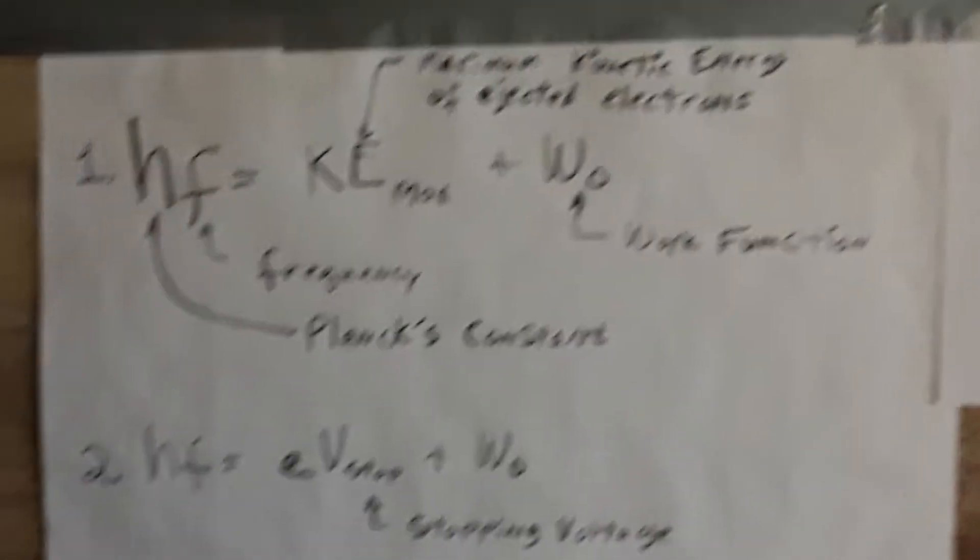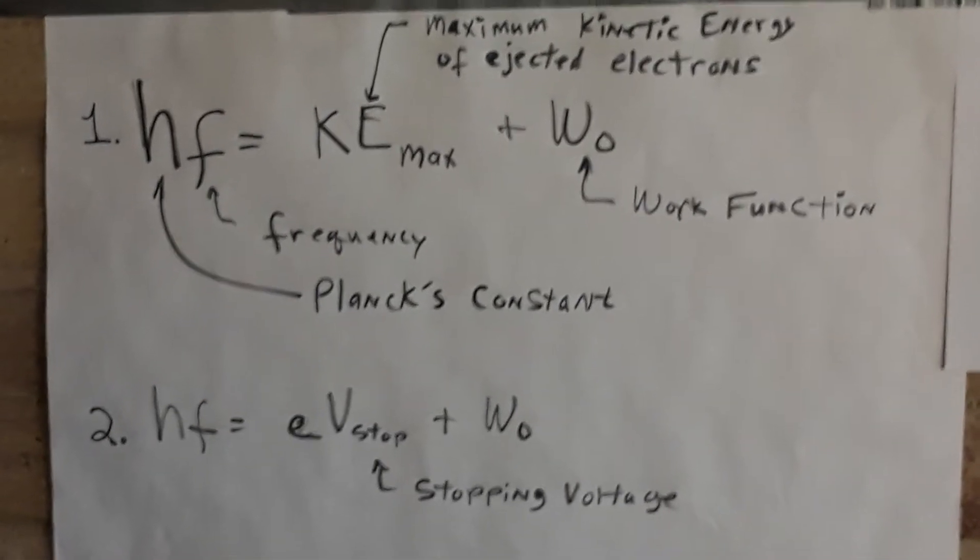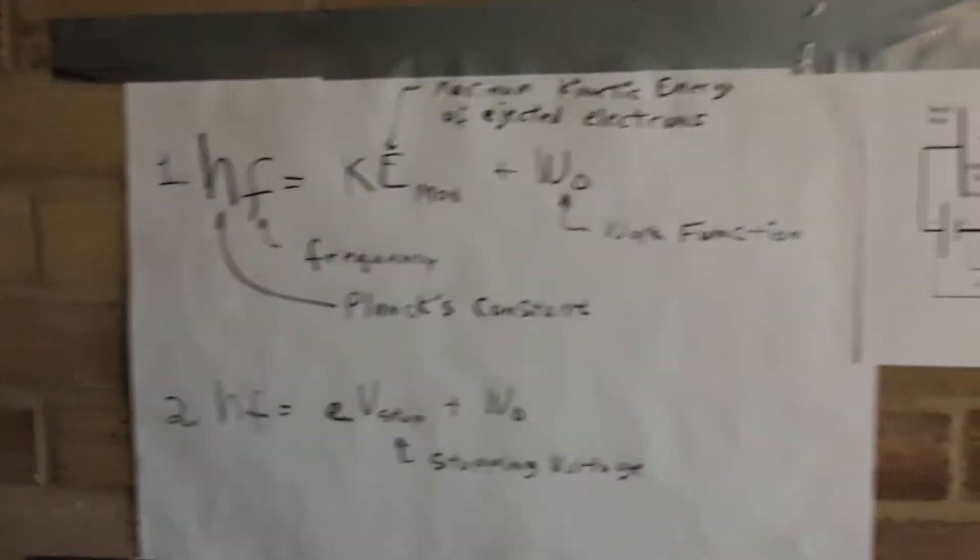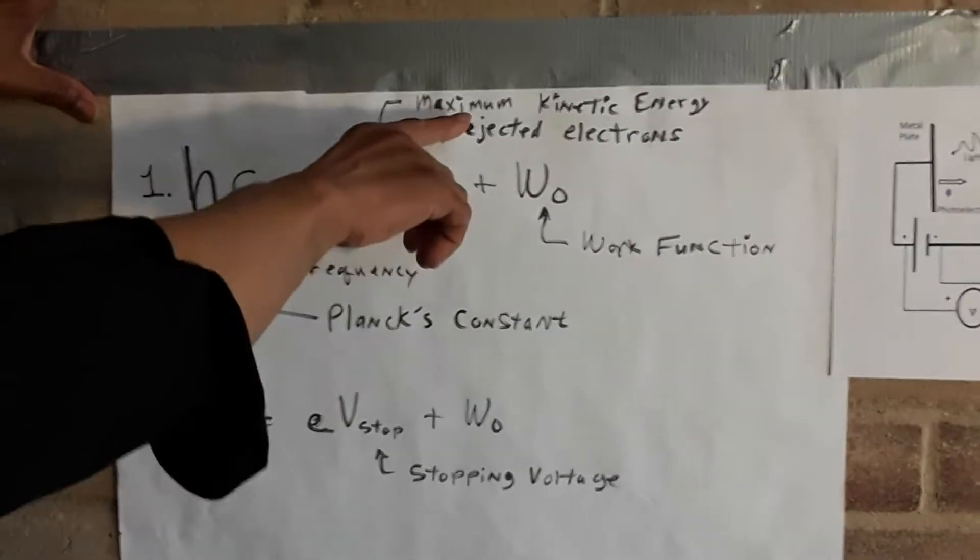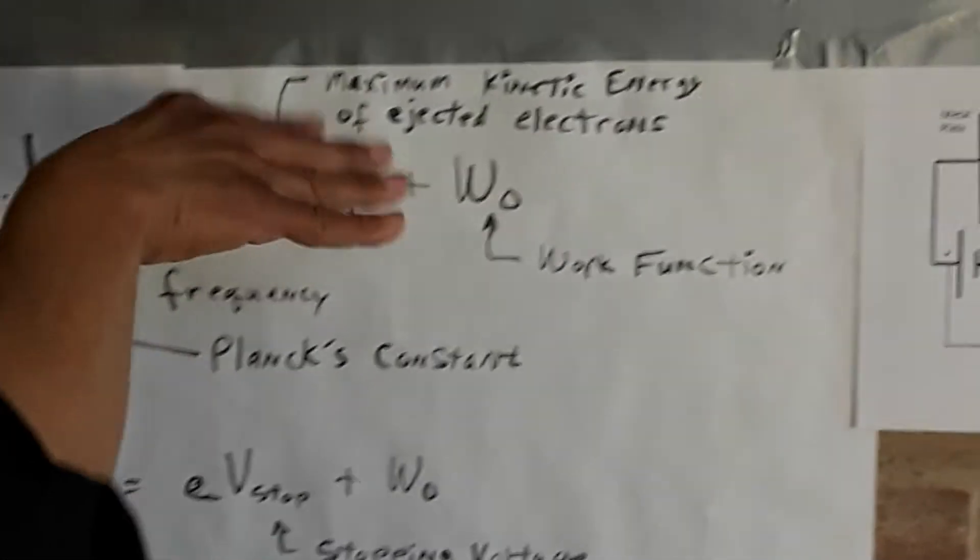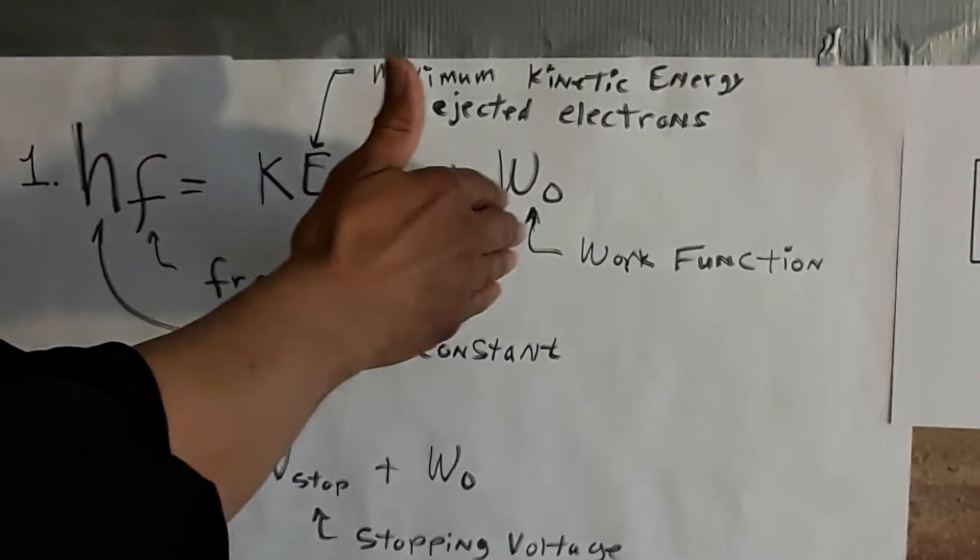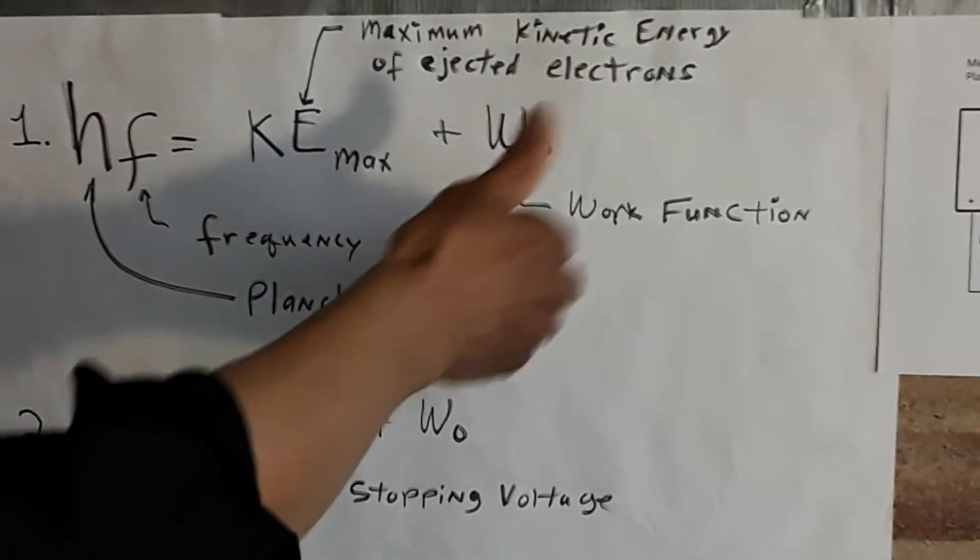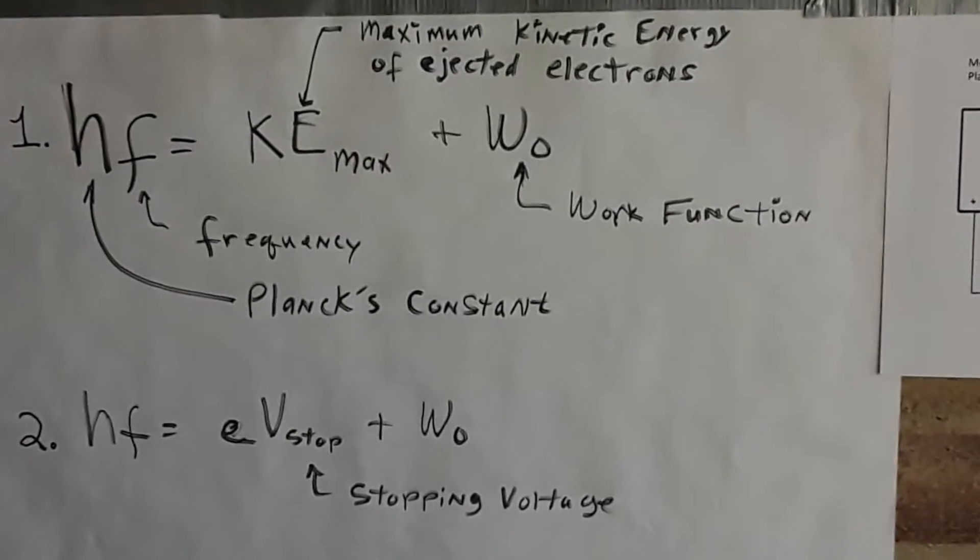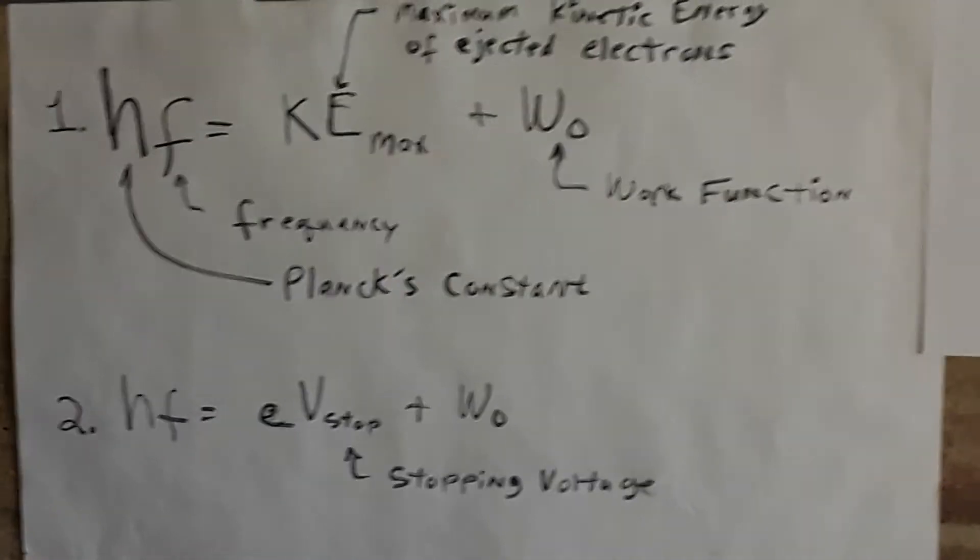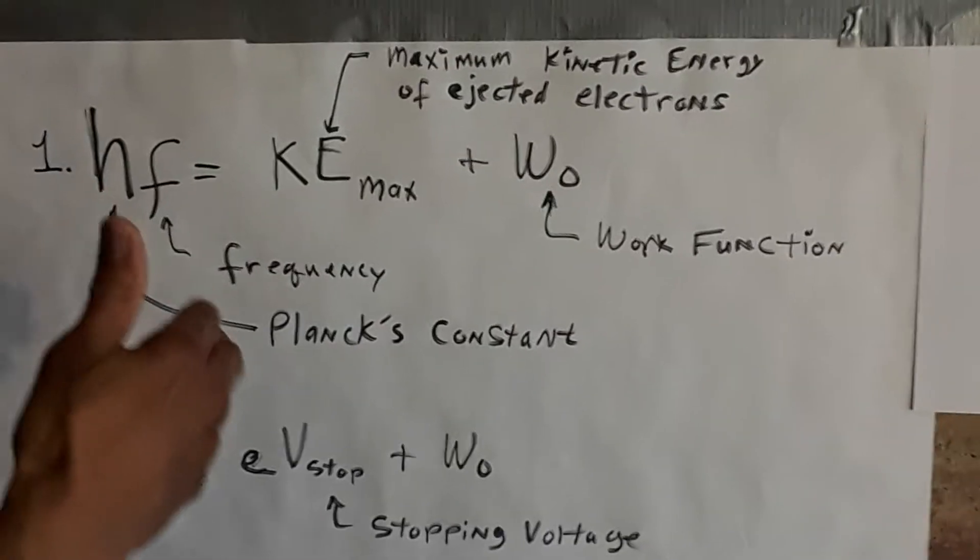Now, once we start the current flowing, the idea is this. This equation involves the maximum kinetic energy of the ejected electron, and this is called the work function, which is the energy it needs to overcome first before it can break away from the surface. We're going to put a back voltage onto the system to stop the current from flowing.